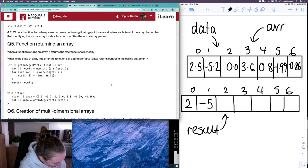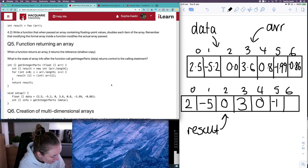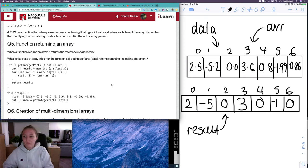So result two is equal to R two. Result three is equal to R three. Result four is equal to R four. Result five is equal to R five. And result six is equal to R six. And you can't have a negative zero, can you? So it's just zero.